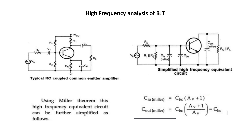High frequency analysis of BJT. At high frequency, the coupling and bypass capacitors act as short circuit and do not affect the amplifier frequency response. However, at high frequency, the internal capacitances do come into play. Using Miller's theorem, this high frequency equivalent circuit can be further simplified. The internal capacitance CBC can be split into C_in(Miller) and C_out(Miller). C_in(Miller) = CBC × (Av + 1), where Av denotes the voltage gain. C_out(Miller) = CBC × (Av + 1) / Av. There are two RC networks which affect the high frequency response: the input RC network and the output RC network.